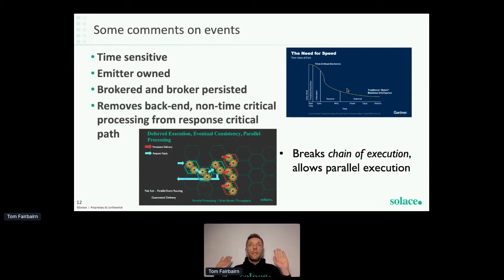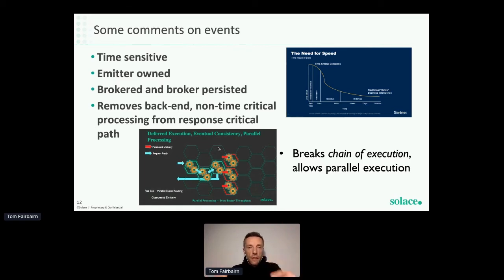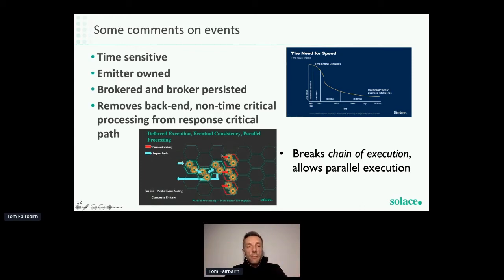The emitter sends the event to the broker and says 'hands off, I'm decoupled, I'm moving on.' A side benefit is the ability to deliver a single event to multiple downstream systems simultaneously, meaning we can parallelize event processing so back-end systems process them in parallel — giving much better response times and more optimal compute. We refer to this as breaking the chain of execution.